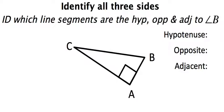This question is asking us to identify the line segments that are the hypotenuse, the opposite, and the adjacent of angle B. So first, let's find angle B. There's point B, it says so right here, and so this is angle B.